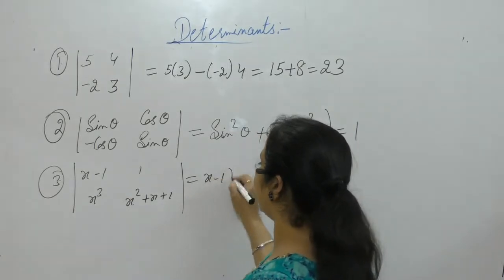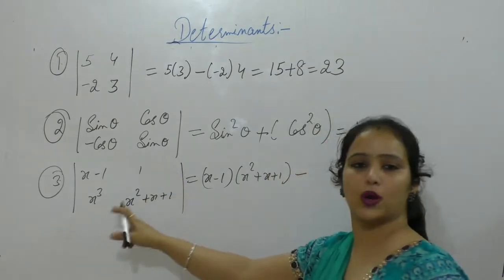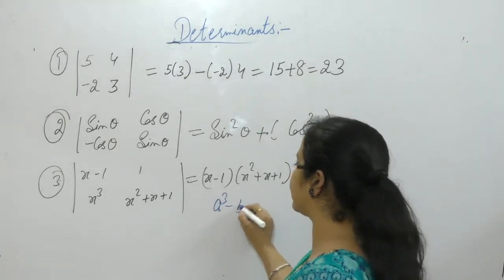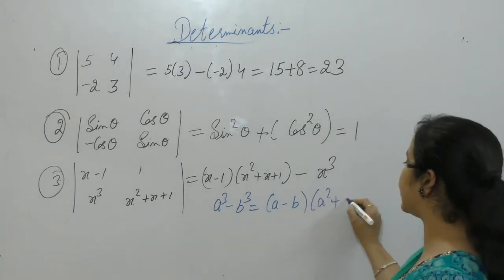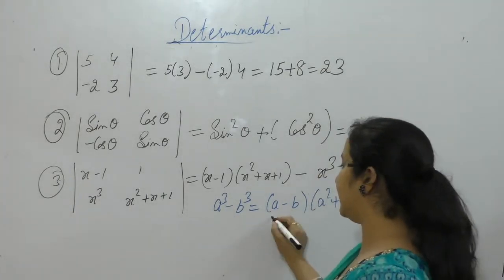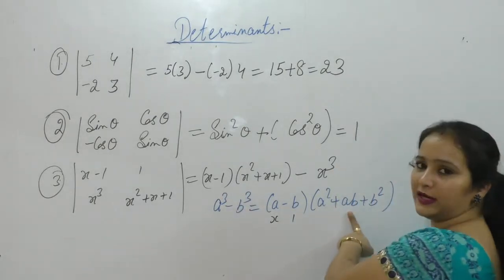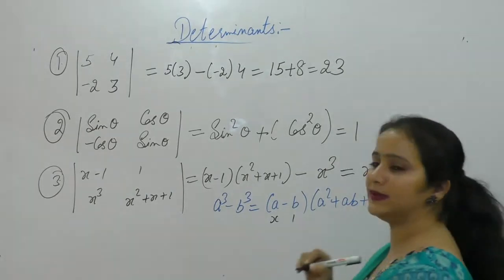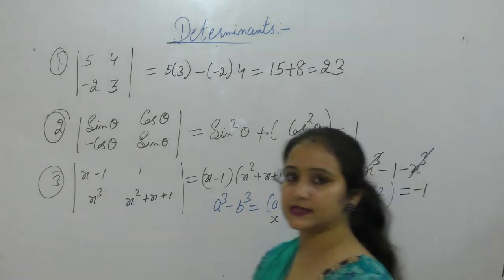Next: evaluate the determinant with (x-1), x³, 1, (x²+x+1). Multiply: (x-1)(x²+x+1) minus 1 into x³. We have the formula a³ minus b³ = (a-b)(a²+ab+b²). Using this formula with a=x, b=1: (x-1)(x²+x+1) = x³ minus 1. So x³ - 1 - x³ = -1. The determinant has value -1.